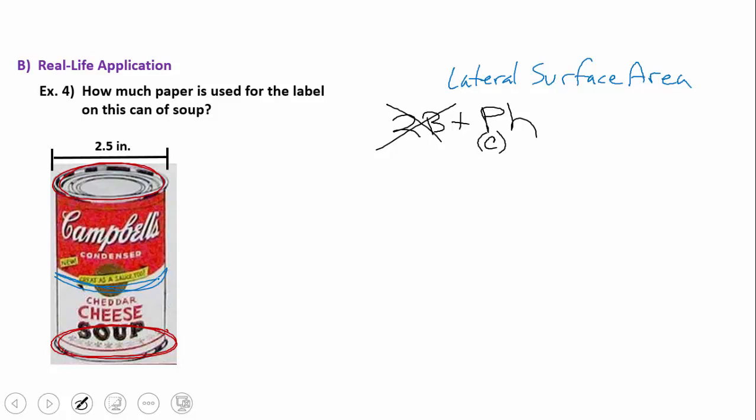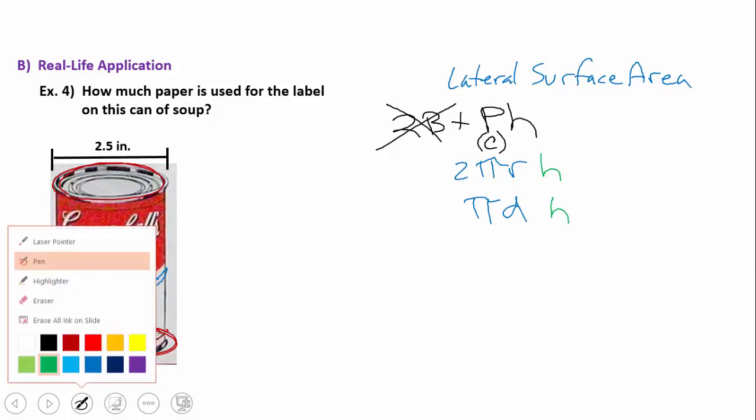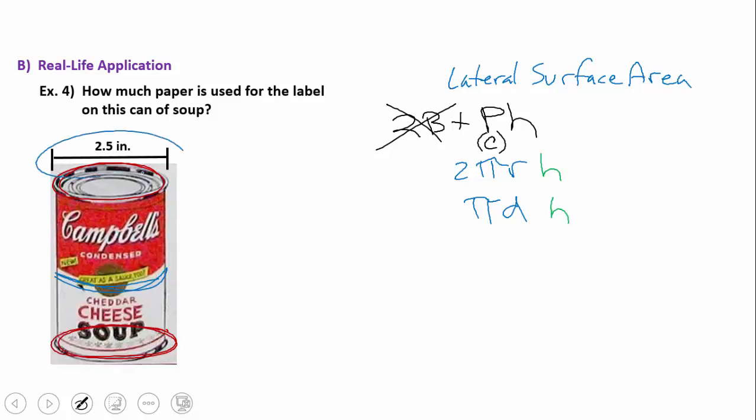So I know I can find that by going 2πr. That's what I usually use because I usually have to find the top and the bottom. But in this particular case I don't, so I might use π times the diameter, and then of course multiply by the height. Since they give us the diameter, I am going to use π times the diameter.